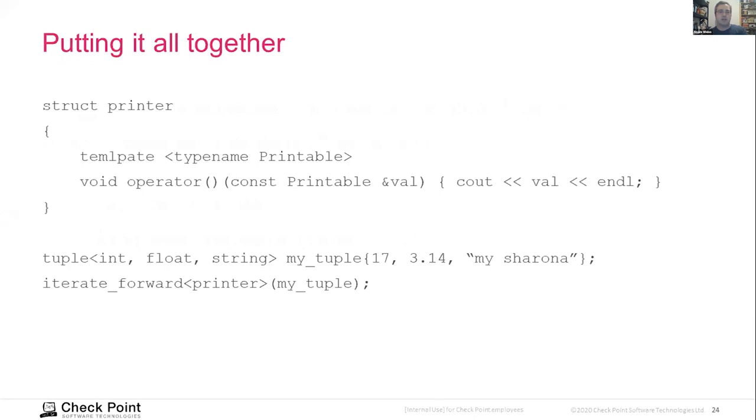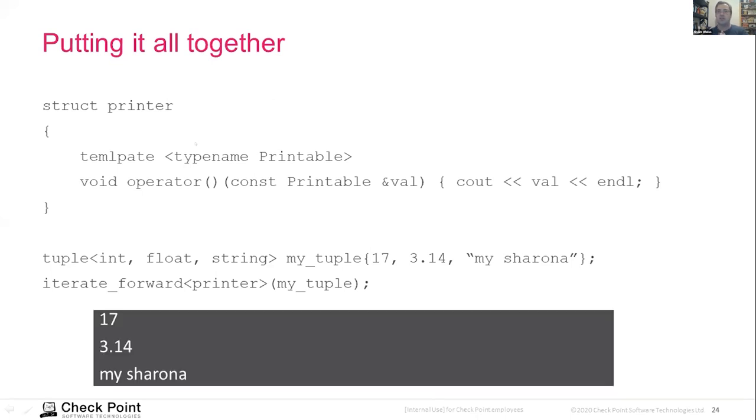Okay. So let's look at an example. So I've created a printer struct that basically is a callable object. And the important thing about it is that it can work with any type of printable element. So this template will catch of course both integers and strings. And you can see, I have an example here of creating a tuple of different types, 17, 3.14 and my Sharona, and I can iterate printer over my tuple and I will get exactly what I want, 17, 3.14 and my Sharona. So that's nice.